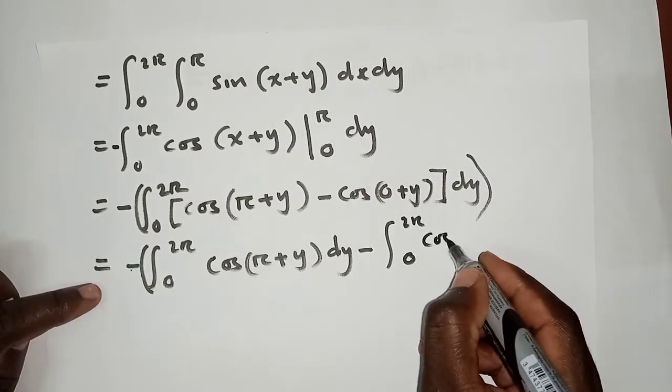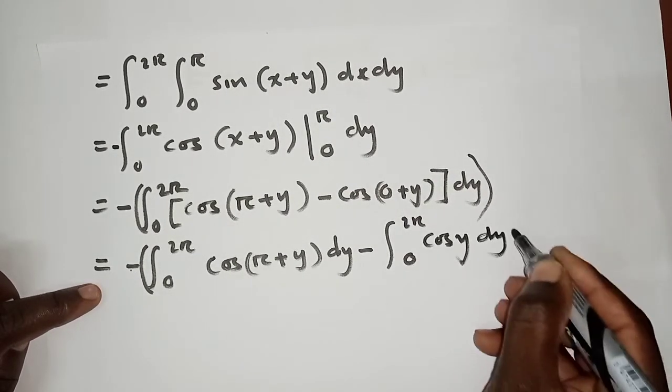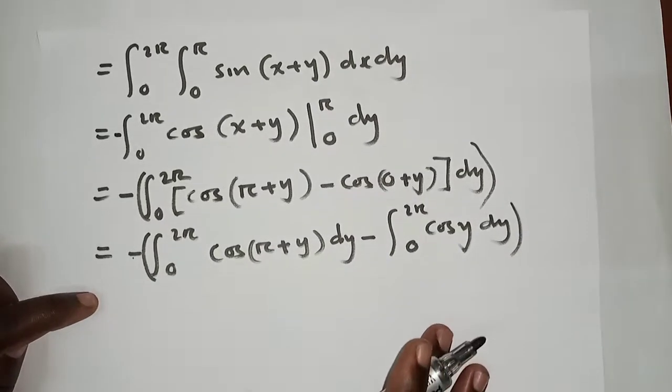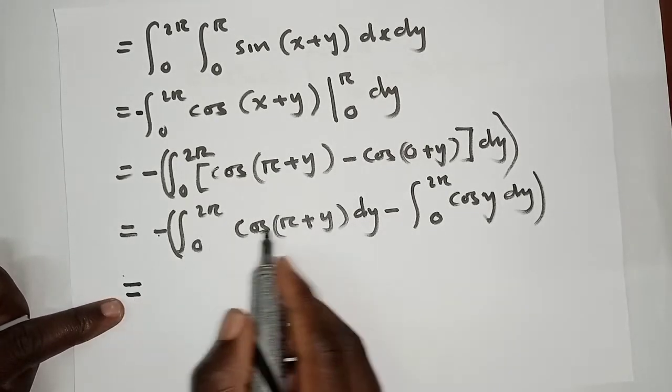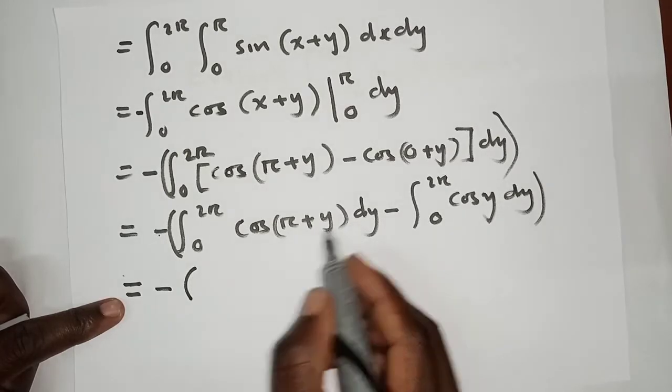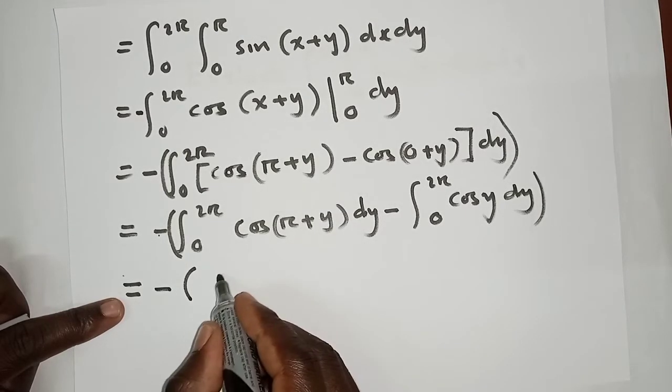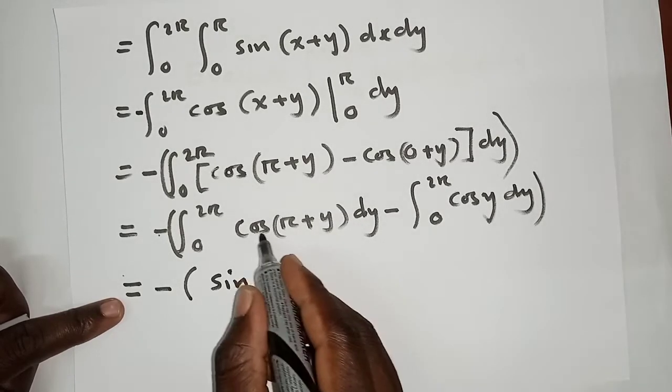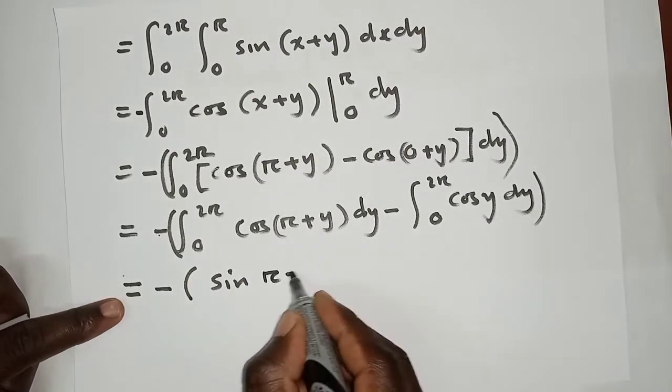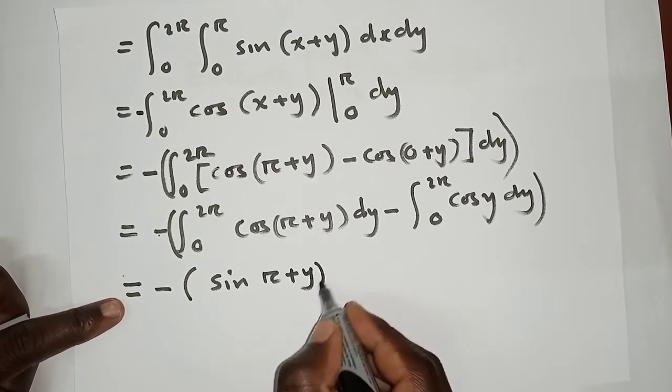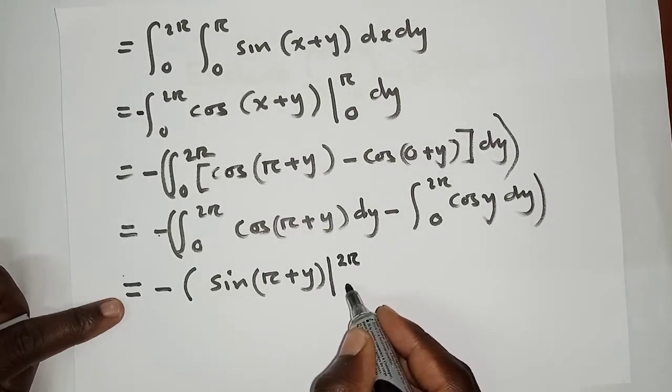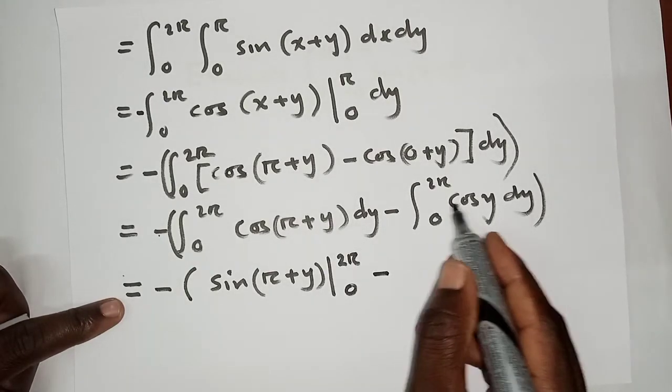We have minus cosine y dy. I'm putting the brackets outside because of this negative which is right here. So now when we integrate with respect to y, we have negative outside and then we have sine of (pi+y), and the limit here is from 2pi to zero. Right here we have sine y, and the limit is from 2pi to zero.